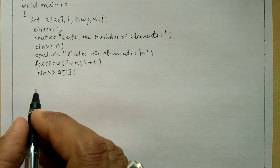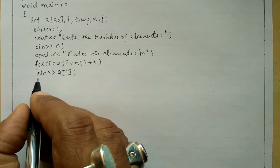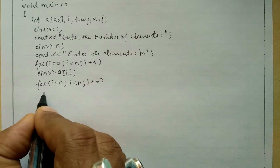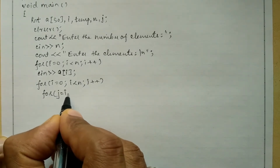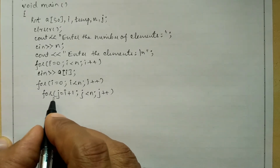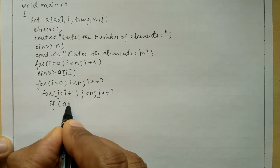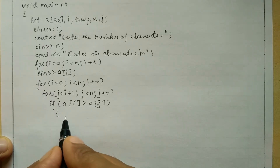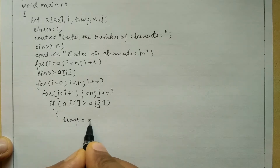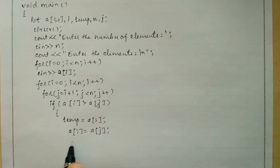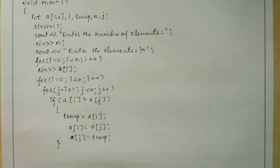After receiving all elements, we apply the sorting logic to arrange them in order. We write: for i equal to 0, i less than n, i plus plus. Inside, another for loop: for j equal to i plus 1, j less than n, j plus plus. We check the condition: if a[i] is greater than a[j], then an interchange takes place — temp equals a[i], a[i] equals a[j], a[j] equals temp. Then the closing brace for the if statement.